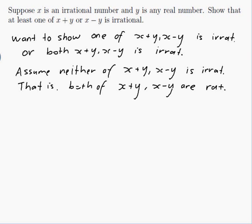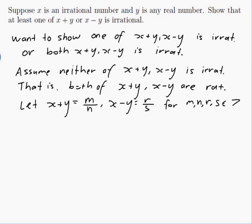What does it mean to be rational? It means that you can write them as a fraction. The definition of a rational number is that it can be written as a fraction where the top and bottom are both integers. So let's do that. Let x plus y be equal to m on n and x minus y be equal to r on s, where all of these things are integers, for m, n, r, s, integers.